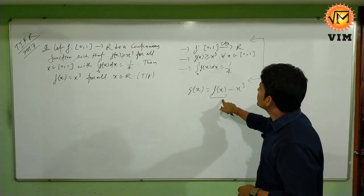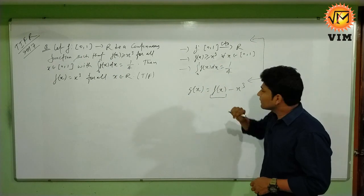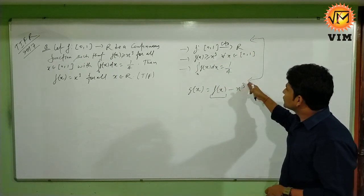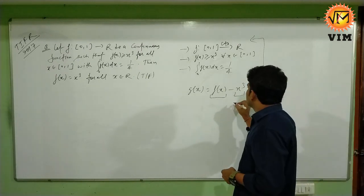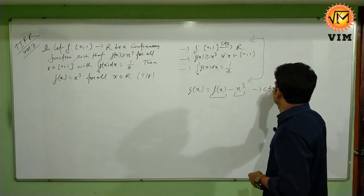f(x) is a continuous function from closed interval [0,1] to R, and x³ is polynomial so it is also a continuous function. Then g(x) is a continuous function.